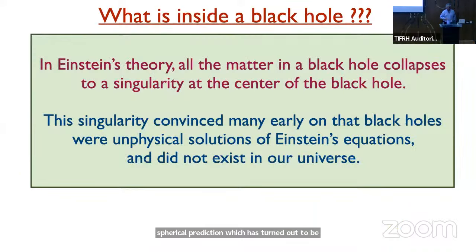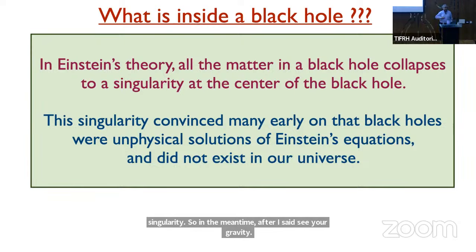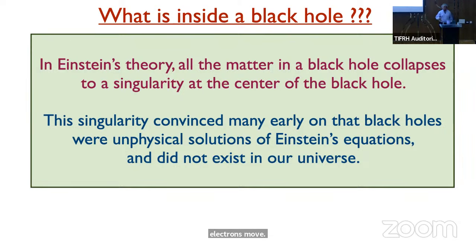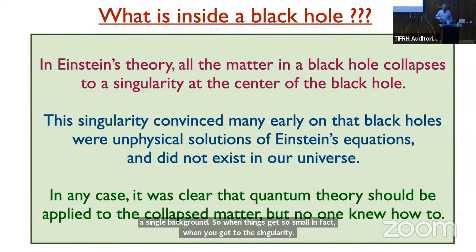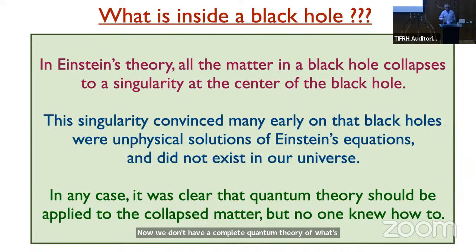There is still the whole problem of the singularity. In the meantime, after Einstein's theory of gravity, we developed quantum theory — a theory of the hydrogen atom and how electrons move in a single atom. When things get so small, as in the singularity, everyone finds it hard to really understand what is inside a black hole, and we have to use a quantum theory. We do not have a complete quantum theory of what is happening inside a black hole today, but there has been an enormous amount of progress.